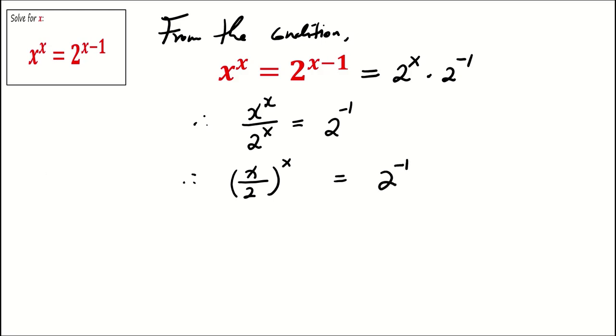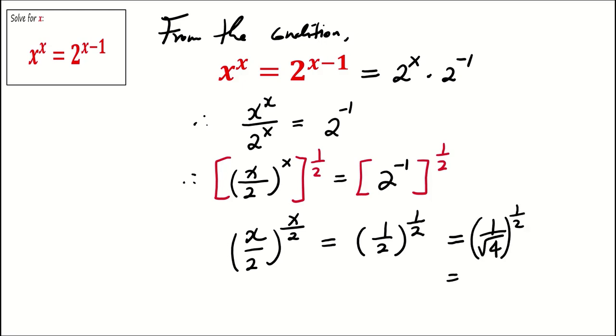Now raise both sides to the power of half, and we obtain x over 2 to the power of x over 2 equals half to the power of half.